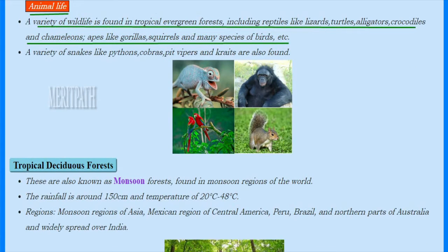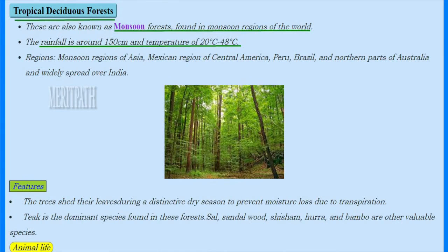Animals found in tropical evergreen forests include reptiles such as lizards, turtles, alligators, crocodiles, and chameleons, as well as apes, gorillas, squirrels, many species of birds, pythons, cobras, pit vipers, and kraits.